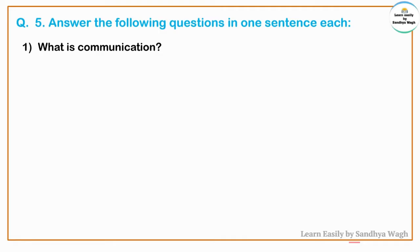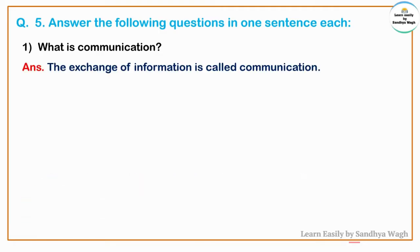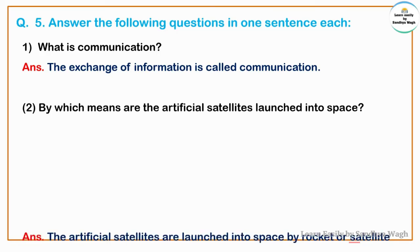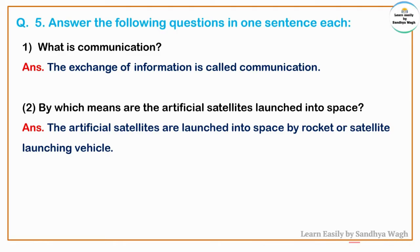Question 5: Answer the following questions in one sentence each. What is communication? Answer: The exchange of information is called communication. By which means are the artificial satellites launched into space?